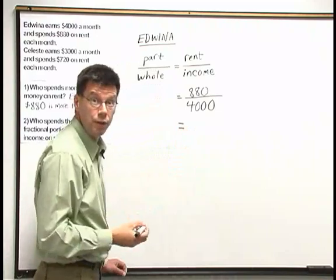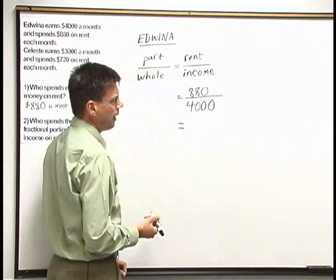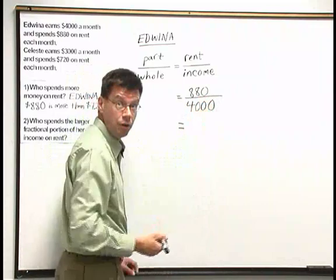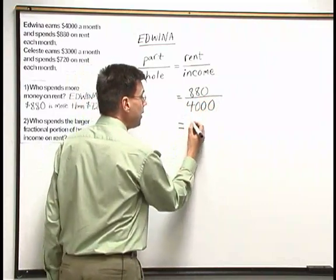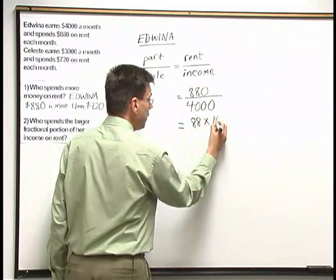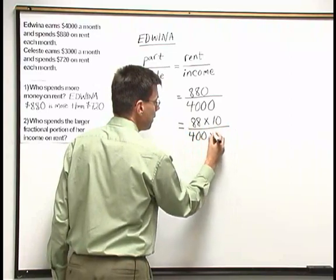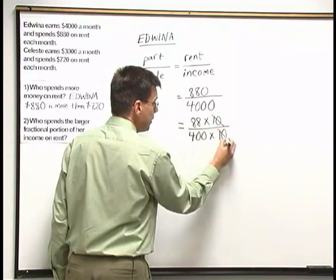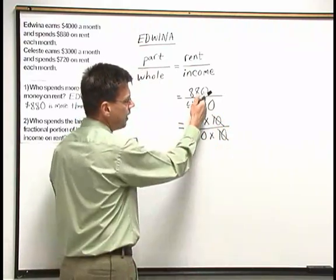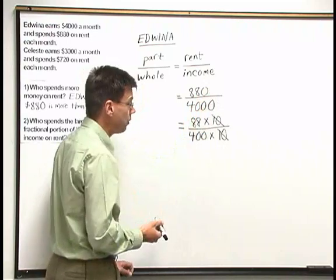Now we'd like to reduce this fraction to lowest terms: 880 over 4,000. We can start by canceling a zero above and below. We could write 880 as 88 times 10 over 400 times 10, and then the tens cancel — one 10 above cancels with a 10 below. That's the same as just crossing out a zero in the ones place above and below in our original fraction.